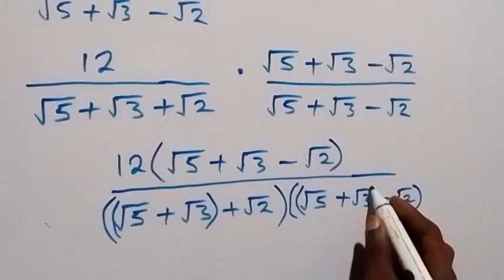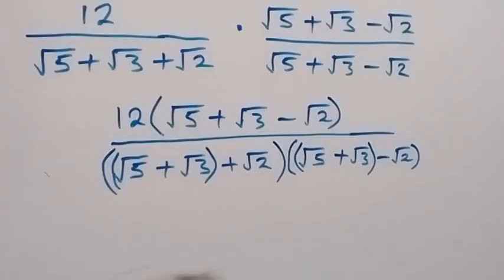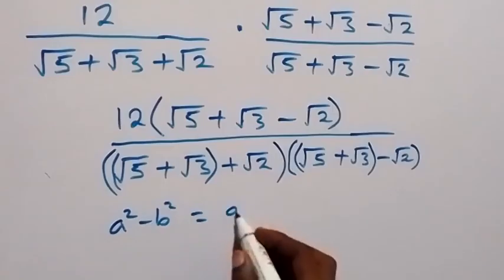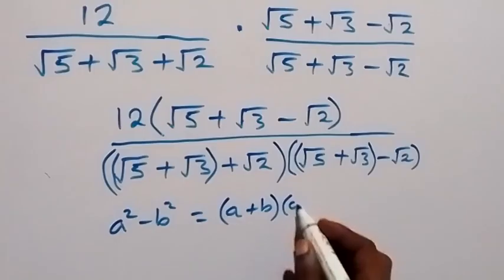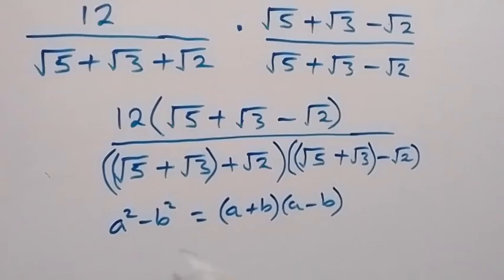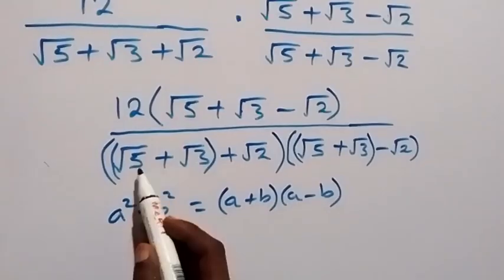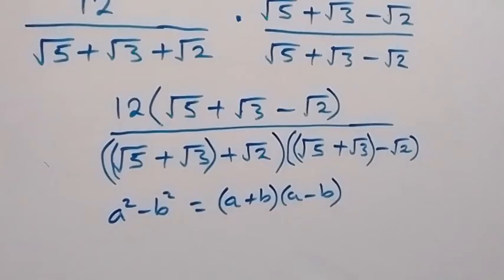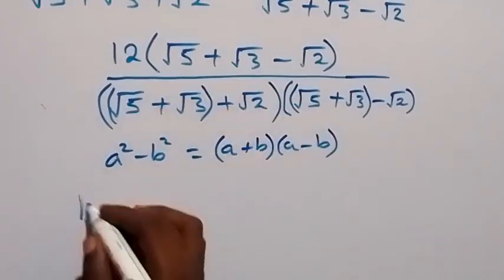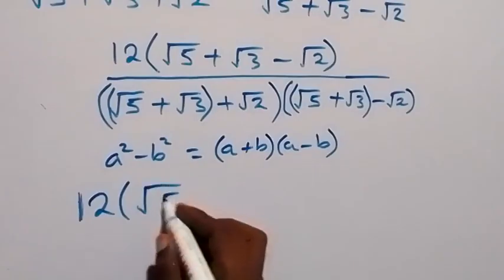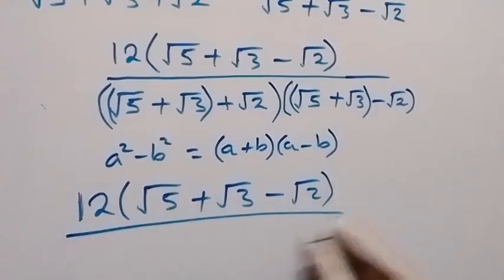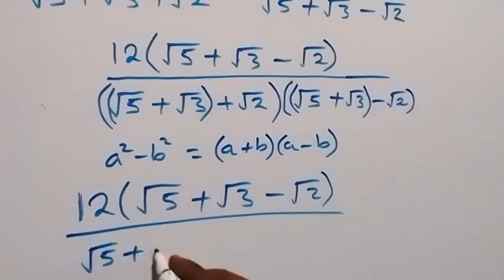From the perfect square difference of squares: a squared minus b squared is the same as (a plus b) times (a minus b). So the right-hand side is like what we have in the denominator. We can now express it as the left-hand side, which should now be root 5 plus root 3 all squared, then minus root 2 squared. So this then becomes 12 into bracket root 5 plus root 3 minus root 2, then divided by root 5 plus root 3 all squared minus root 2 squared.